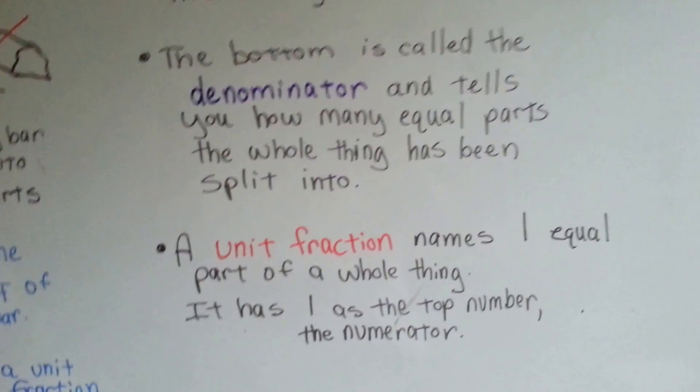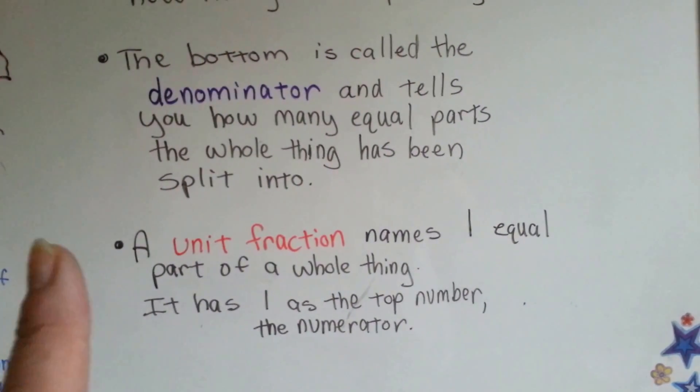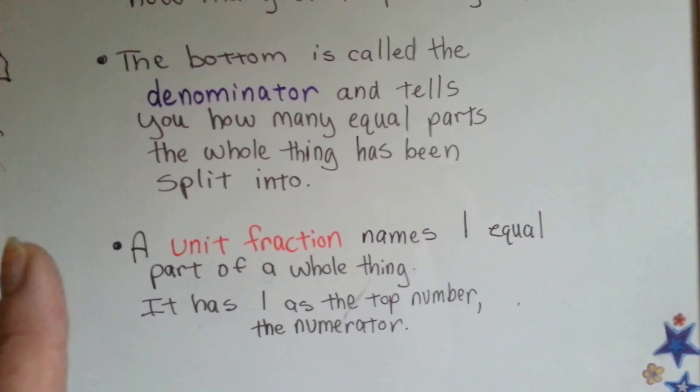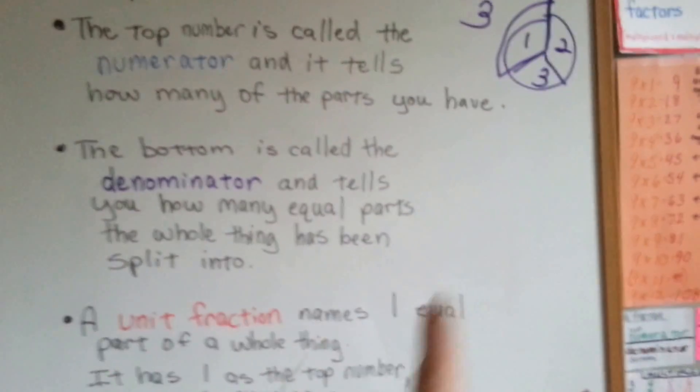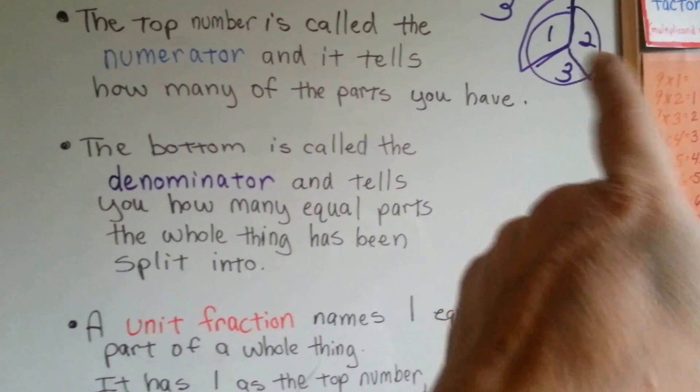Well, a unit fraction names one equal part of the whole thing. So it has one as the top number, the numerator. So, one-third would be the unit fraction for that pizza.